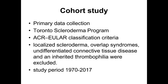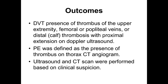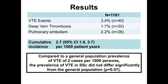Patients with localized systemic sclerosis, overlap syndromes, and undifferentiated connective tissue disease were excluded from this study. The study period was 1970 to 2017. Deep vein thrombosis was defined as the presence of thrombus in the extremity, femoral, or popliteal veins with extension proximally on Doppler ultrasound. The presence of pulmonary embolism was defined as the presence of emboli on CT thorax angiogram.